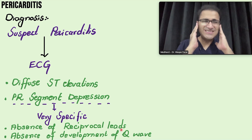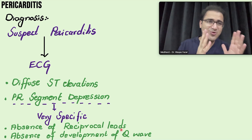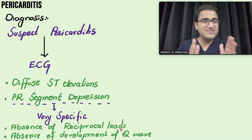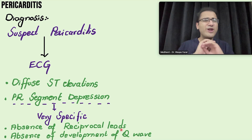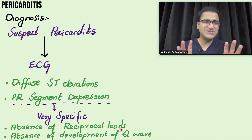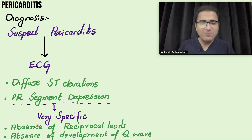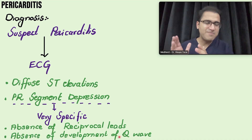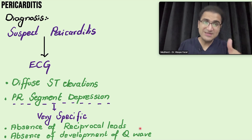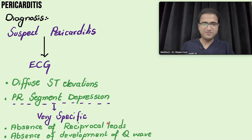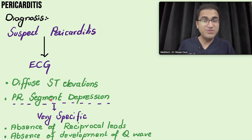Other ECG findings include absence of reciprocal changes and absence of Q wave development. Q waves develop after MI; since these patients have pericarditis and not MI, no Q waves develop. The key ECG findings to remember are: diffuse ST segment elevation and PR segment depression, with PR depression being the most specific finding for pericarditis.